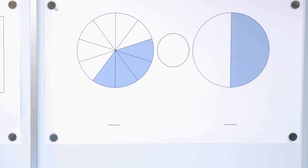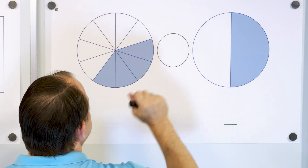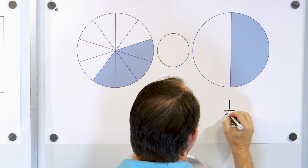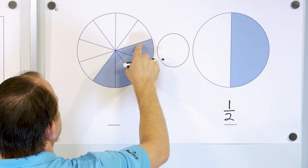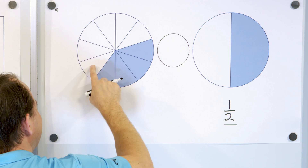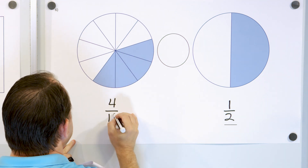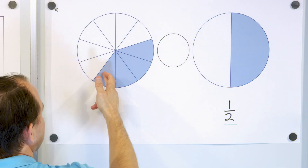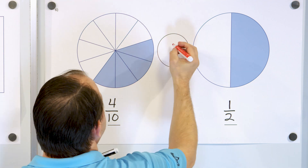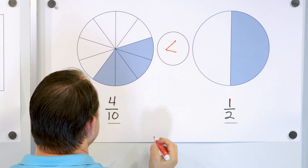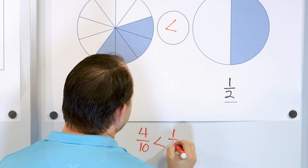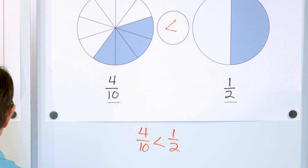Let's take a look at the next one. This one's really easy — it's just 1 half, 1 out of 2 pieces. And this one is 1, 2, 3, 4, 5, 6, 7, 8, 9, 10 — it's 4 out of 10 pieces, so 4 tenths. The smaller amount is 4 tenths, so the arrow points towards the 4 tenths. We say 4 tenths is less than 1 half. 4 tenths of a pizza is definitely going to be less than 1 half of a pizza.